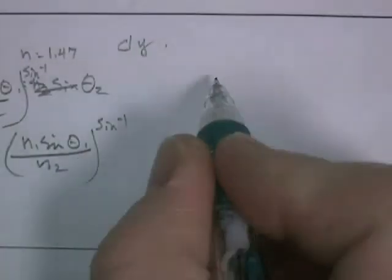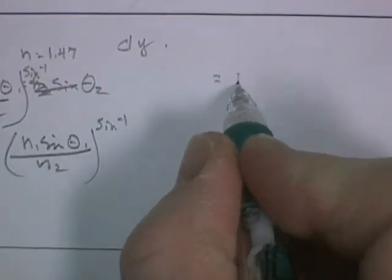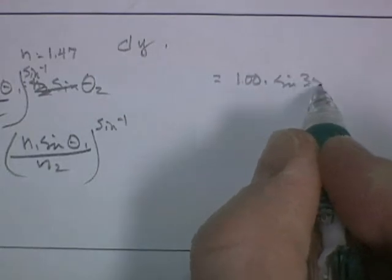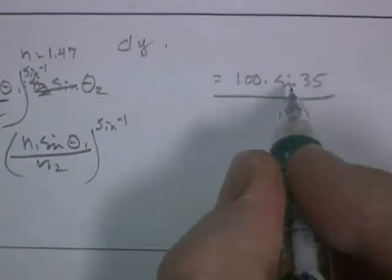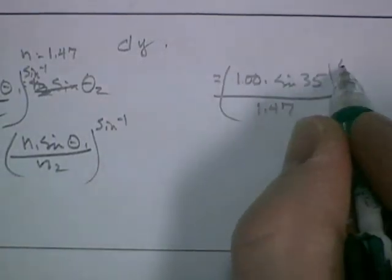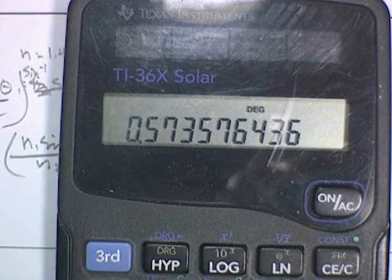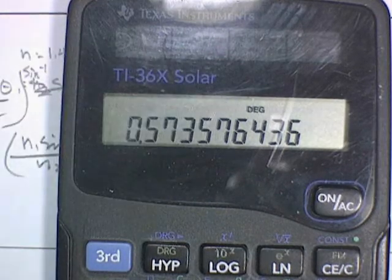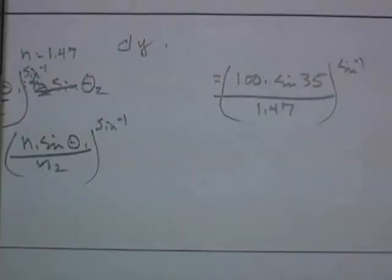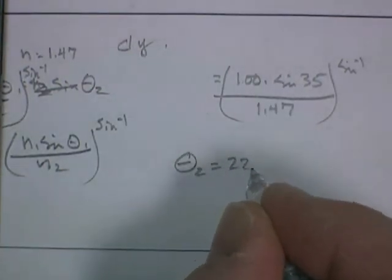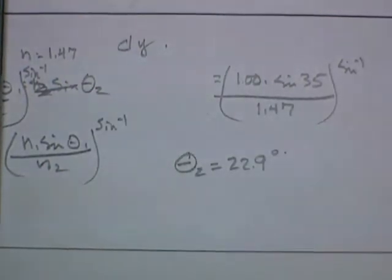So now I plug in my values. N1 is 1.0, no units, times the sine of 35 degrees, divided by N2, 1.47, no units. Oh, and don't make the mistake of having your calculator in gradient mode. Now when I'm done punching my buttons on my calculator, my angle of refraction is equal to 22.9 degrees, about 23 degrees.